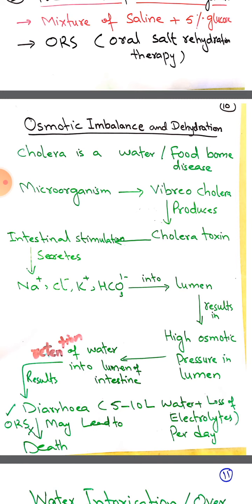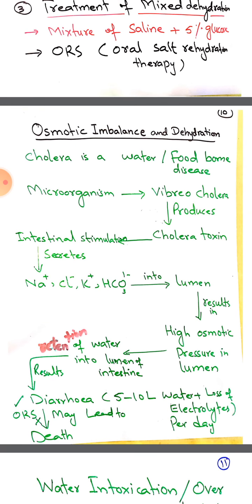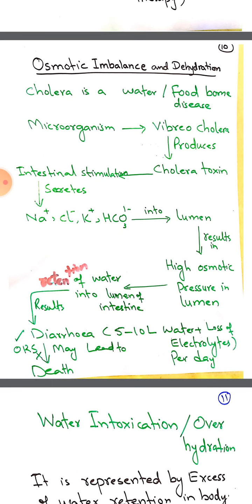Cholera toxin increases intestinal stimulation for secretion and reabsorption of electrolytes like sodium, bicarbonate, chloride, and potassium. When more cations and anions are present in the intestinal lumen, more water is dragged toward it due to high osmotic pressure. This causes a synergistic effect retaining water in the lumen, resulting in loose diarrhea with 5–10 liters of water and electrolytes lost per day. It can be treated by ORS therapy; if untreated, it may be fatal.